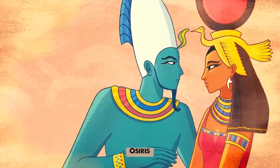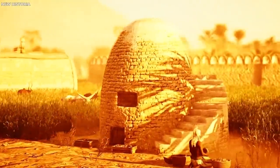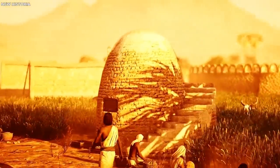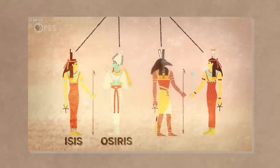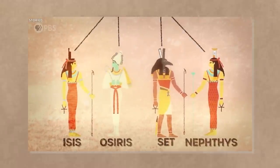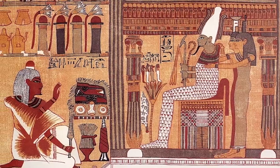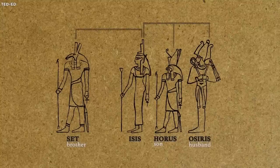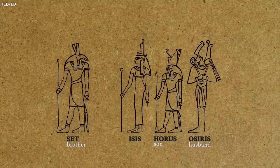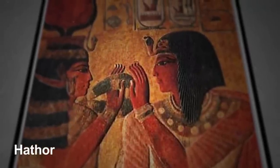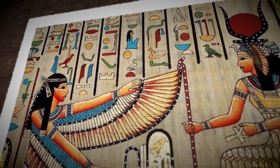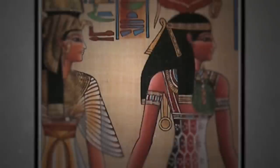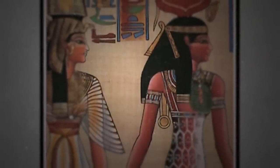Beside Isis stood Osiris, her husband and the god of fertility, agriculture, and the afterlife. Osiris was often depicted with green skin, symbolizing vegetation and renewal. It's said that Isis resurrected Osiris after he was killed by his brother Seth. This resurrection was often associated with sexual intercourse, reinforcing the concept of sex as a life-giving, regenerative act. Another significant deity was Hathor, the goddess of love, beauty, and joy, who was also a protector of women, particularly during childbirth, and played a crucial role in rituals related to sexuality and fertility.